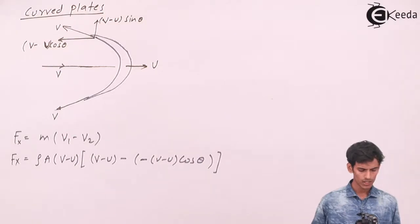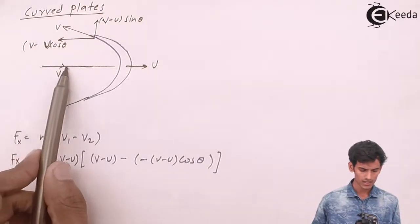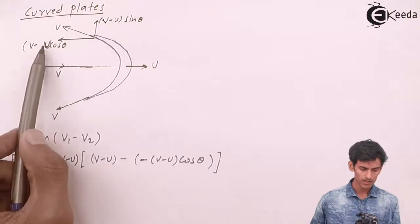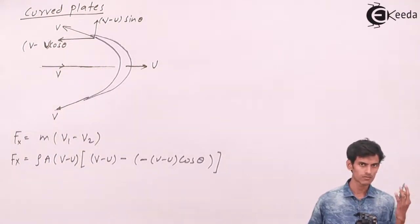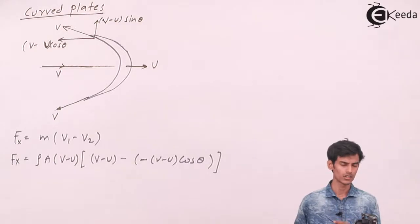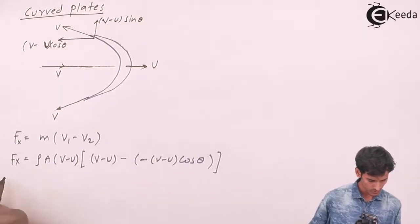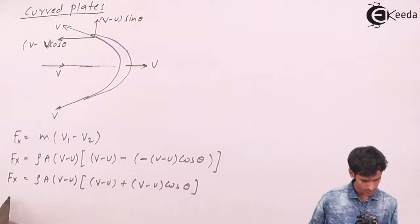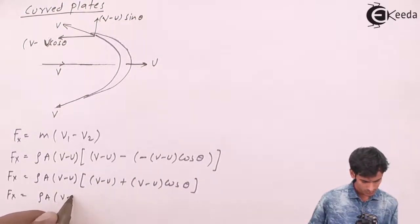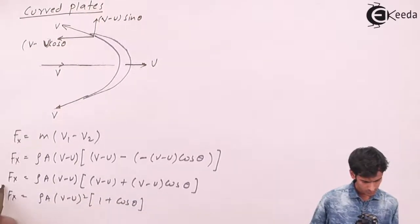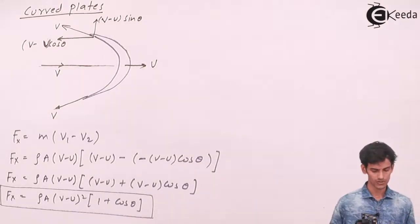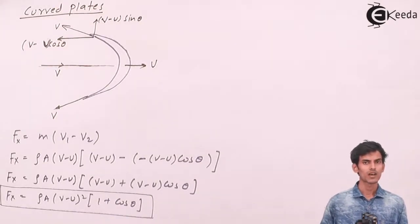So the formula is V1 minus V2. V1 is the x component of velocity entering the plate. V2 is the x component of velocity leaving the plate, which is (V − U)cos θ in the opposite direction, so it becomes minus of minus (V − U)cos θ. Therefore the x component of force is ρA(V − U)²(1 + cos θ).